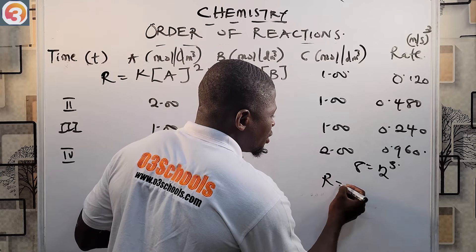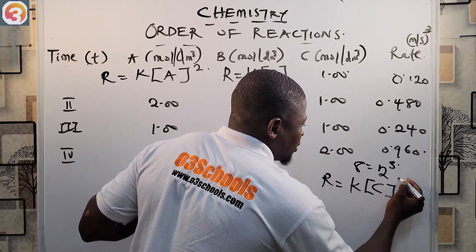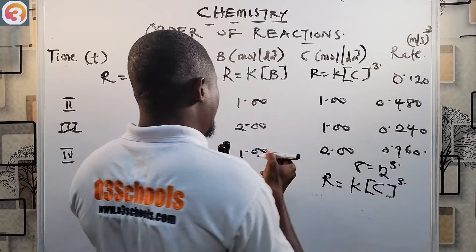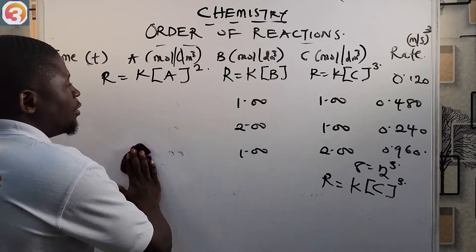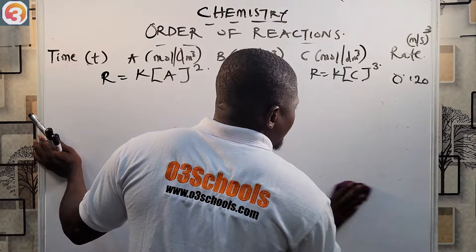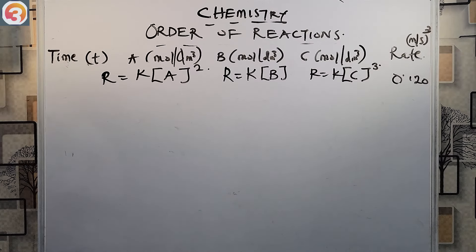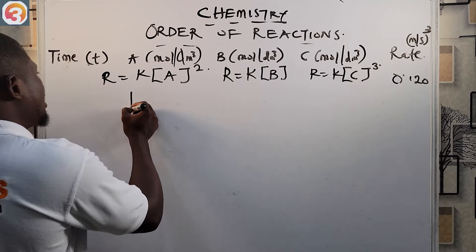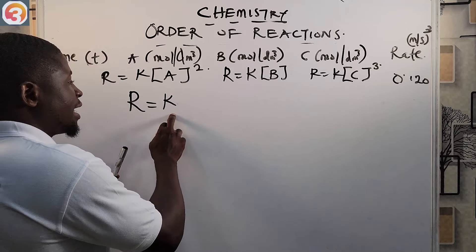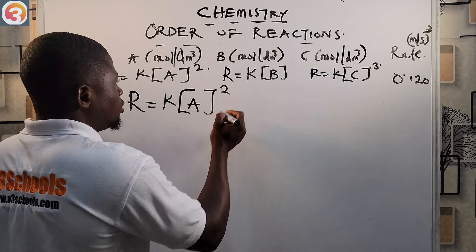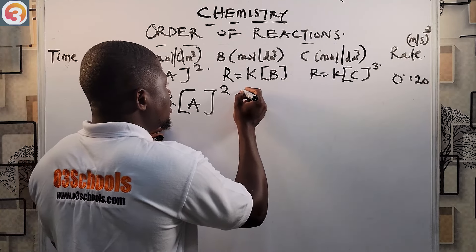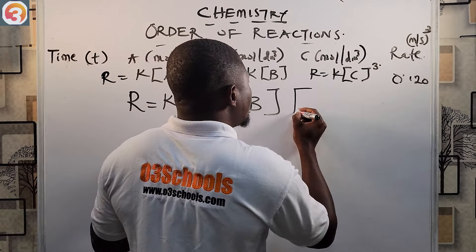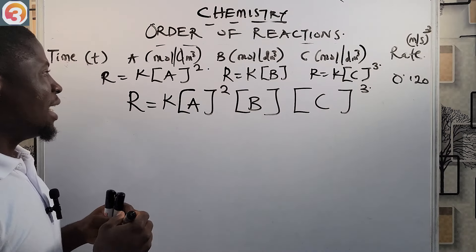0.960 is eight times 0.120 — the rate increased by a factor of 8, which is the same as 2³. If you know your indices well, 2³ = 8. So we write R = k[C]³ — the reaction is third order with respect to C. There is a full video dedicated to indices on this channel if you need to review that.